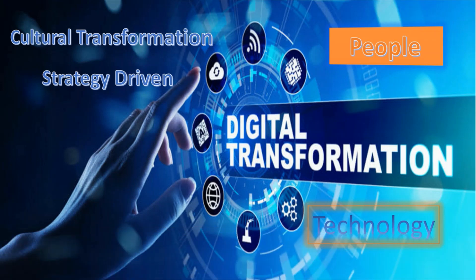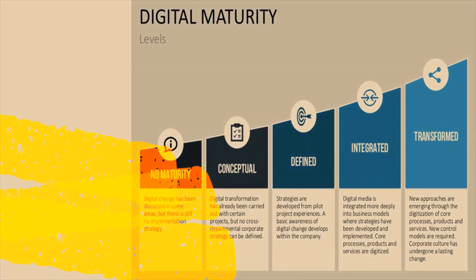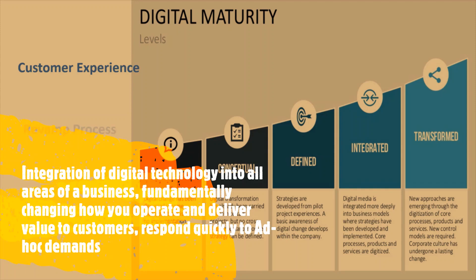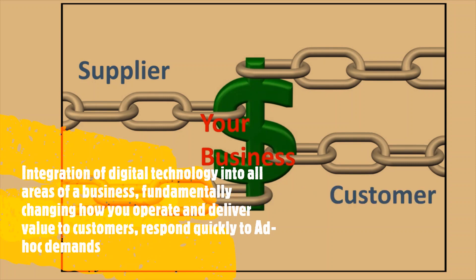In a digital transformation, the customer experience and operational processes will be revamped. You start thinking from your business to your customer's business. You have a supplier, you have your own business, and then you have your own customers - this entire value chain is connected through digital transformation. You pass on your requirements, and as technology improves, even ad hoc requirements are passed out to your vendors. You understand their limitations and capabilities, and this entire value chain starts from your supplier to your manufacturing unit, your sales, or whichever functions you operate.